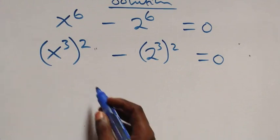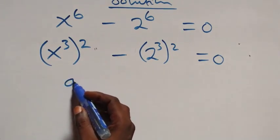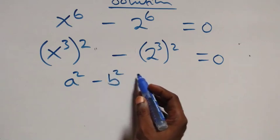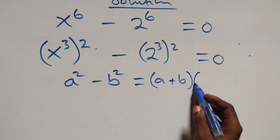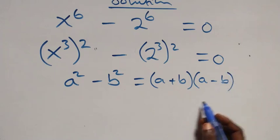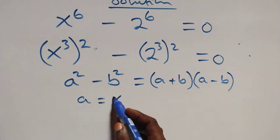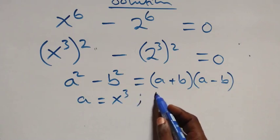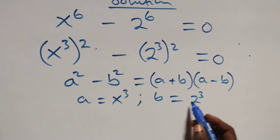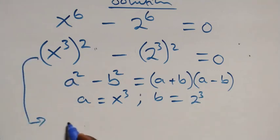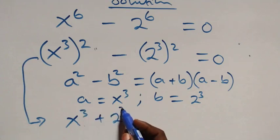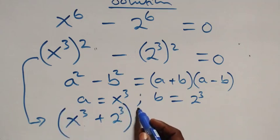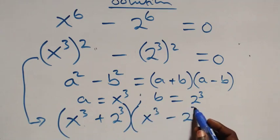From here we follow the variance of the difference of two squares: a squared minus b squared is the same as (a + b)(a - b). Here, a stands for x raised to power 3 and b stands for 2 raised to power 3. So this becomes (x³ + 2³)(x³ - 2³).